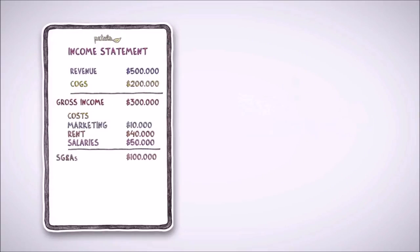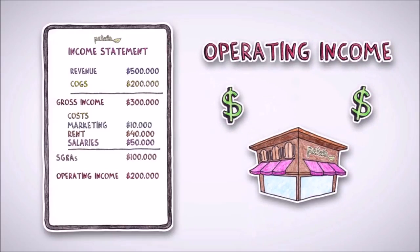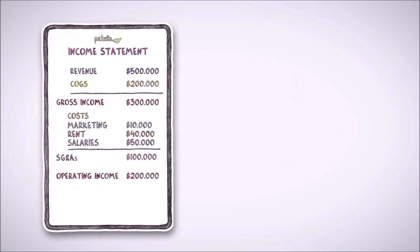Gross income minus SG&As is referred to as operating income, or income earned from a company's operations. Lastly, Mary subtracts taxes from her operating income to get her net income.